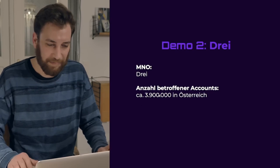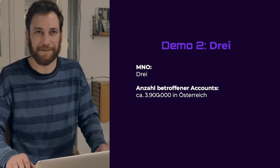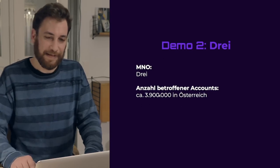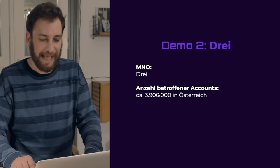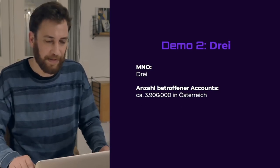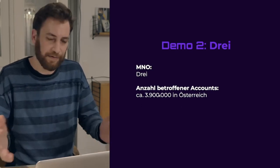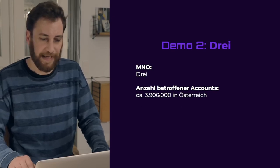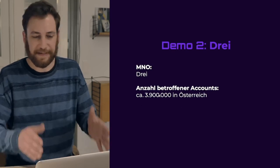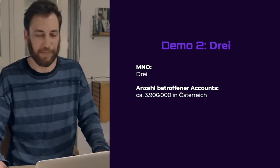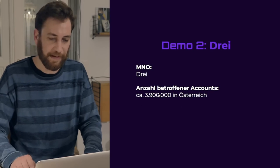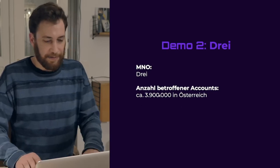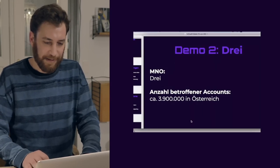You really should not do that as a developer, but many people still do: there are state-changing GET requests. The second demo is with a mobile provider called 3, which is not a virtual mobile provider but operates in Austria across three countries, with 3.9 million accounts in Austria alone. Let's look at the second demo.